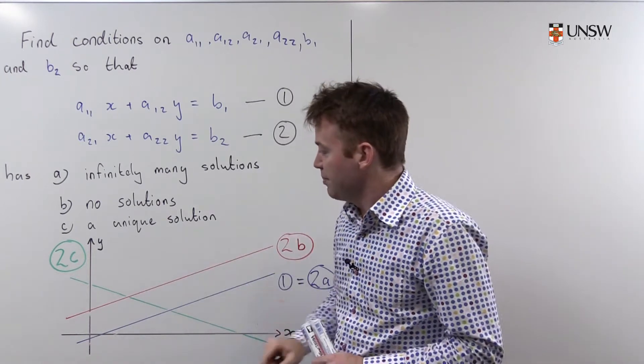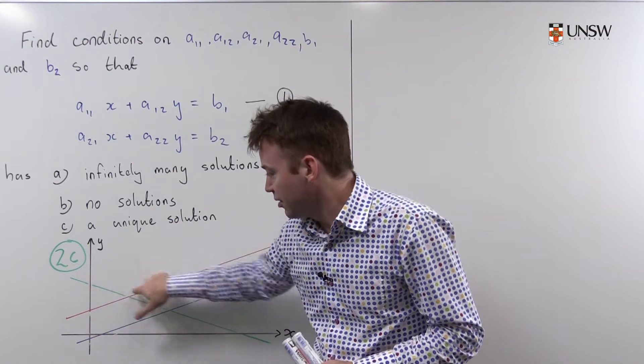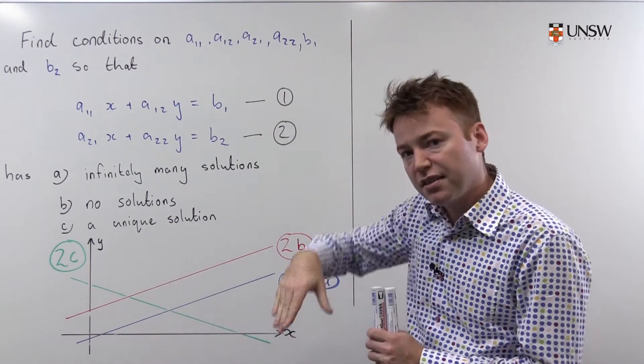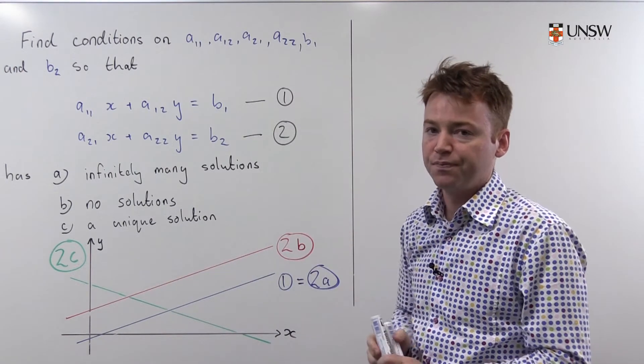The third scenario is what happens if you take a first line as the blue line again and then the third line as a line that intersects the blue line at a single point. You end up with one solution.